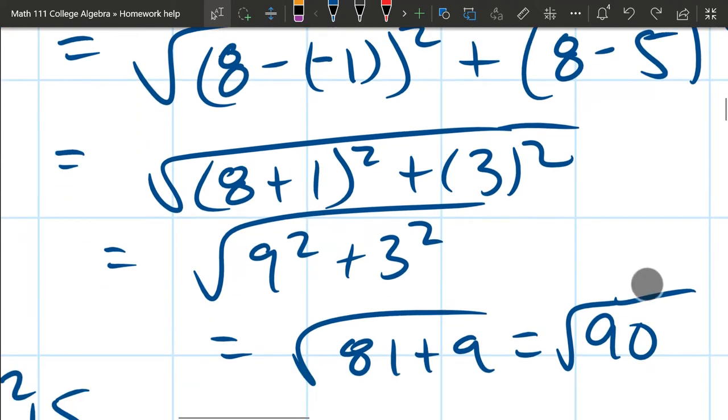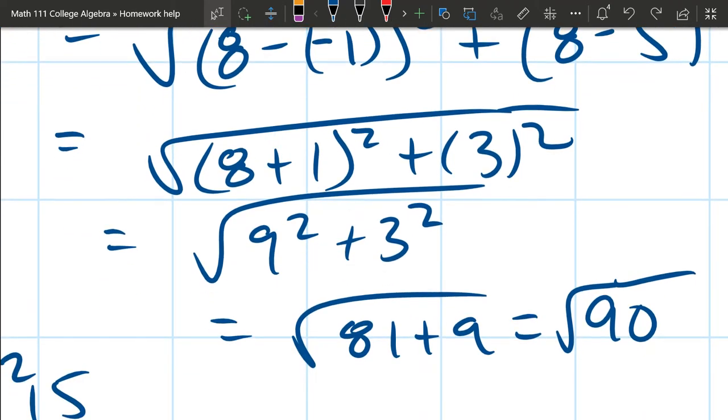Square those two. 9 squared is 81. 3 squared is 9. And add those numbers, you get square root 90.